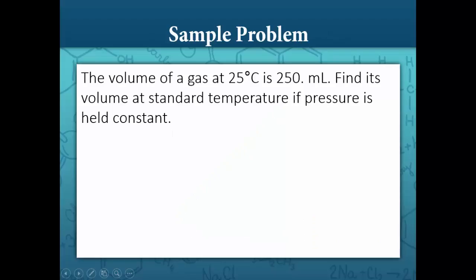Let's look at a sample problem. The volume of a gas at 25 degrees Celsius is 250 milliliters. Find its volume at standard temperature if pressure is held constant. We're not going to worry about pressure — it's going to be the same before and after. Our equation is V1 over T1 is equal to V2 over T2. We want to find the new volume when the temperature changes to standard temperature.